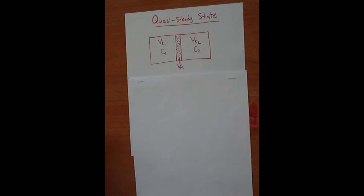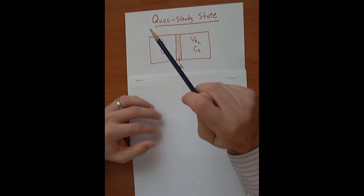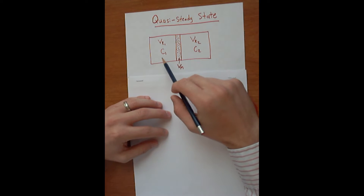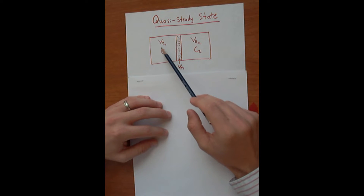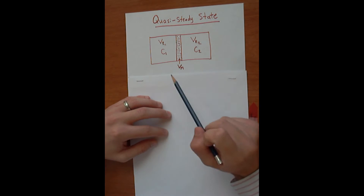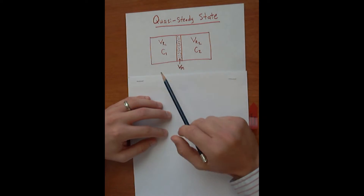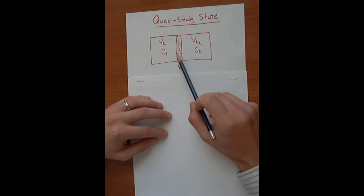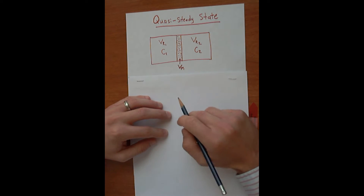Now I'm going to do a quick overview of quasi-steady state diffusion. The example I talked about in class was a membrane between two large reservoirs with volumes VR1 and VR2 for the first and second reservoirs. Each reservoir has a concentration labeled C1 and C2 of the solute. We're interested in the concentration profile and the diffusion going through this membrane, which has a volume of V sub M.